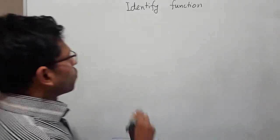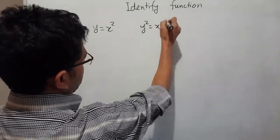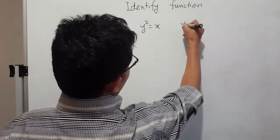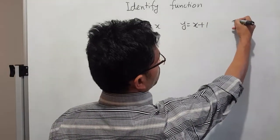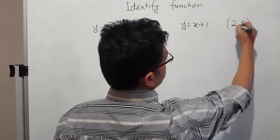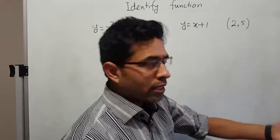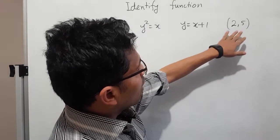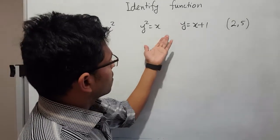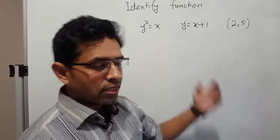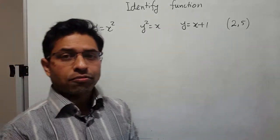For example, y equals x squared, or y squared equals x, or y equals x plus 1. Even a point like (2, 5) — where 2 is the x-coordinate and 5 is the y-coordinate — is also a relation. So all these are relations showing a connection between x and y.